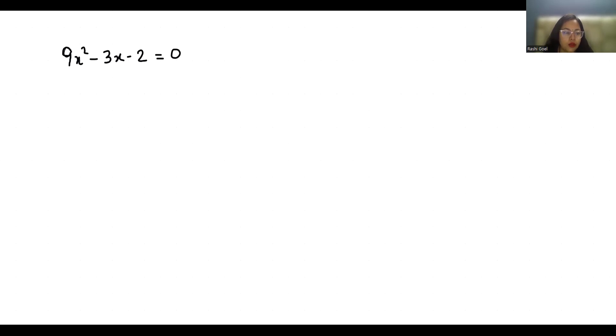I am going to rewrite this as 9x² - 6x + 3x - 2 = 0.